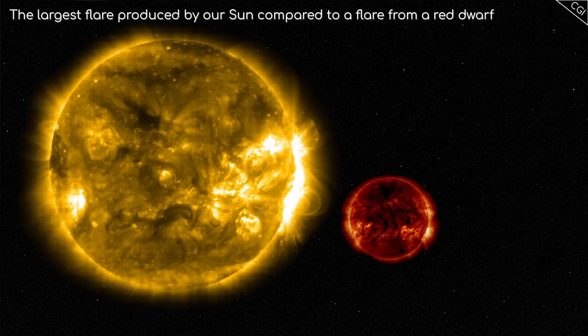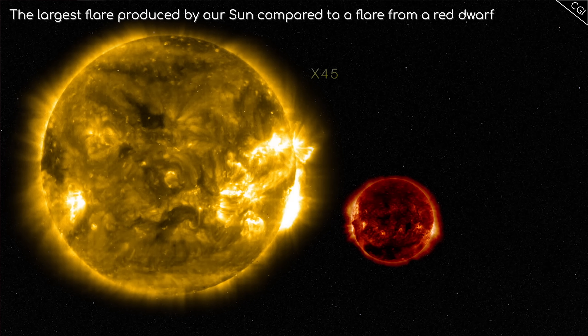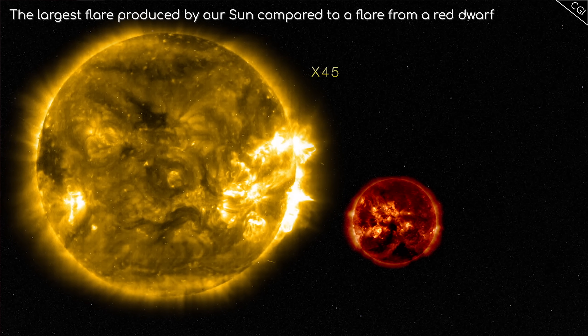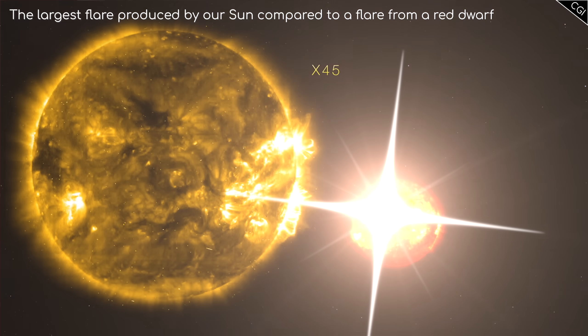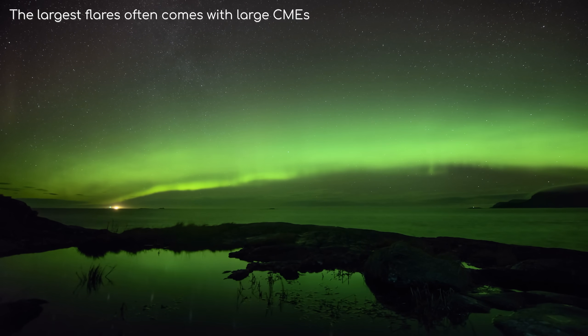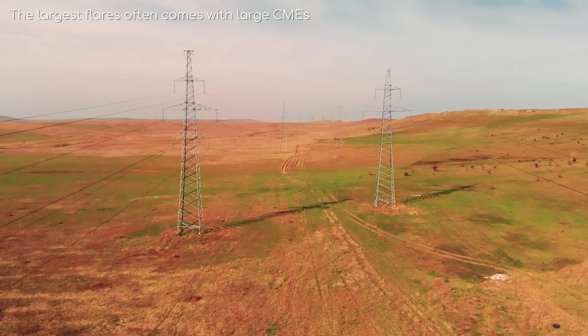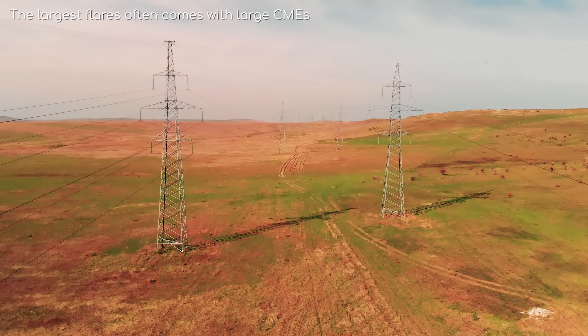Additionally, a curious phenomenon with red dwarfs is that they also produce huge flares, much larger than the ones our sun produces. They would easily knock satellites offline on a regular basis, and Earth would have some spectacular aurora.